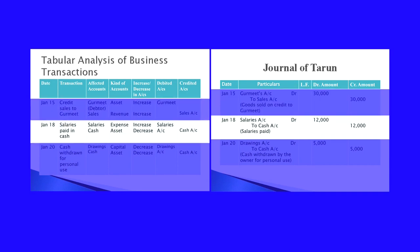On January 18th: salaries paid in cash. The two affected accounts are salaries and cash. Salaries come under expense; cash comes under asset. Salaries increase — expense increases — and cash is going outside the business when you pay salary, so cash decreases. When expense increases, the expense account is debited — salary account will be debited. When asset decreases, you credit — cash account is credited. So salaries account is debited and cash account is credited.